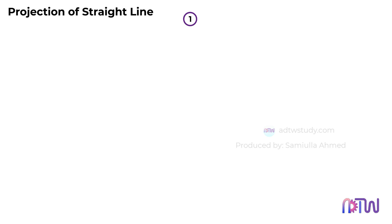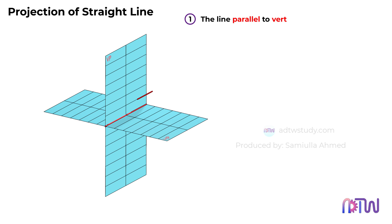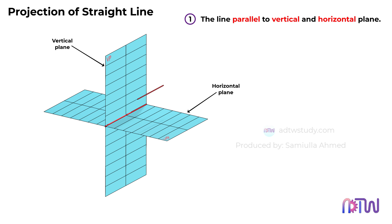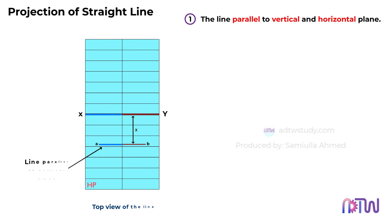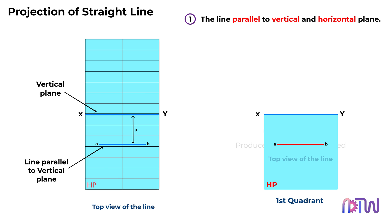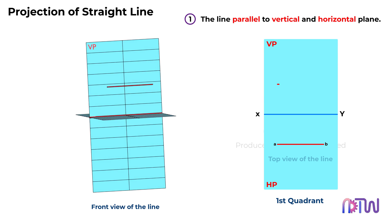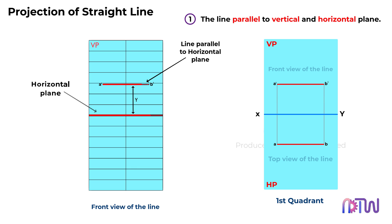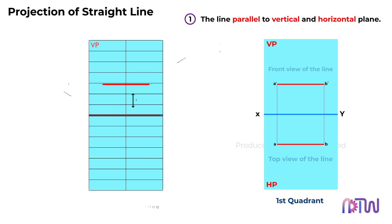Let's begin with Position 1: the line can run parallel to both the vertical and horizontal planes. When viewed from the top, the line aligns parallel to the vertical plane. Likewise, when viewed from the front, it appears parallel to the horizontal plane. In this situation, projecting the front and top views onto the vertical and horizontal planes results in straight lines, and the length remains uniform in both cases.